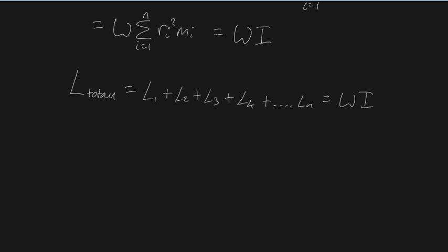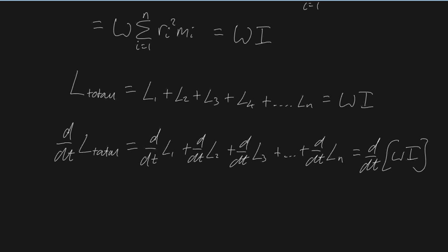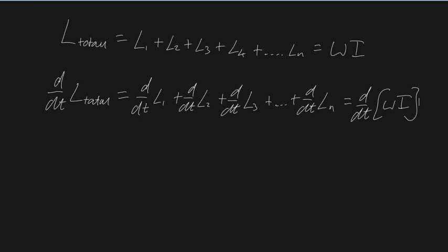What I'm going to do now is differentiate all of these. The derivative of our total angular momentum is going to equal the derivative of each of these terms — because the derivative sign has the distributive property — so it'll be d/dt(L1) + d/dt(L2) + d/dt(L3) + ... + d/dt(Ln), and that's going to equal d/dt(ωI). Since I is just a function of your radius and mass — neither of which is influenced by time — we can bring I outside the differential sign, and we're left with I times d/dt(omega), which we know is I × alpha.